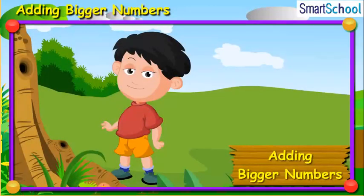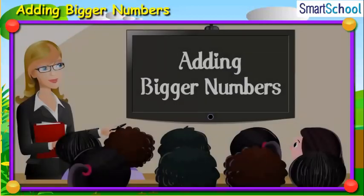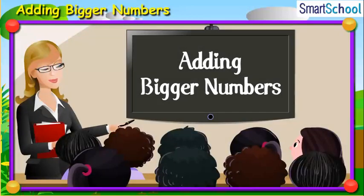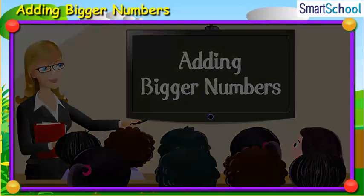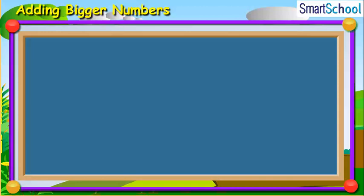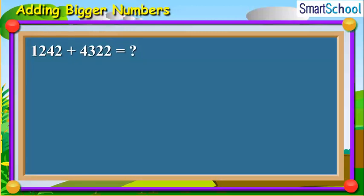Adding bigger numbers. Children, having learnt the basics of addition, now let us try to add bigger numbers. Let us see this example. Here we need to add 1,242 and 4,322.